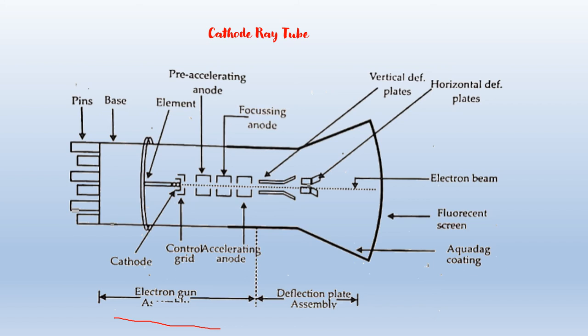The third assembly is the Fluorescent Screen. When the electron beam strikes the screen of the CRT, a spot of light is produced. On the inner surface of the screen, a phosphor coating is present. The secondary electrons are collected by a conductive graphite coating called the aqua-dag coating, which is electrically connected to the second anode.